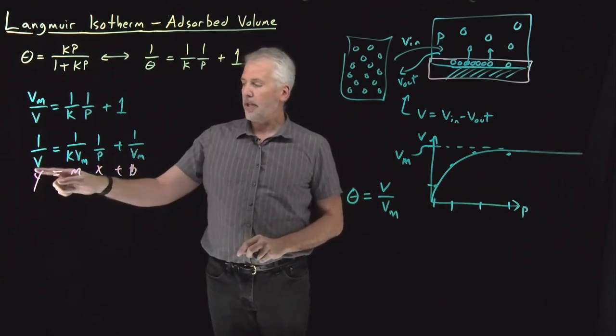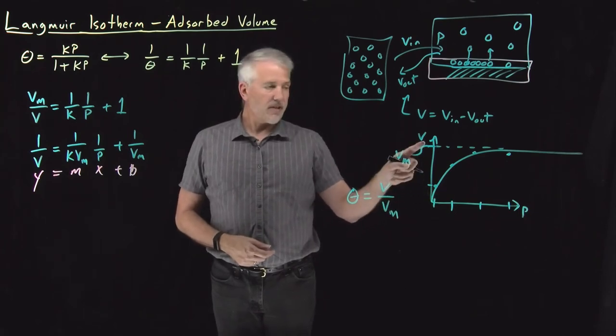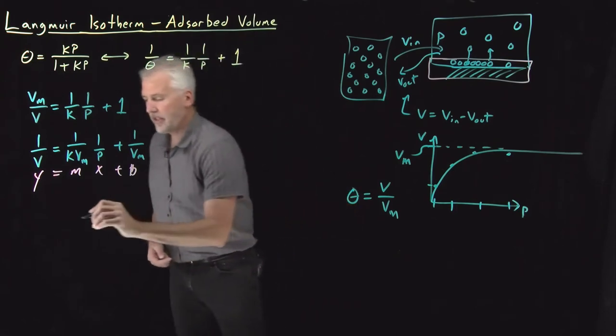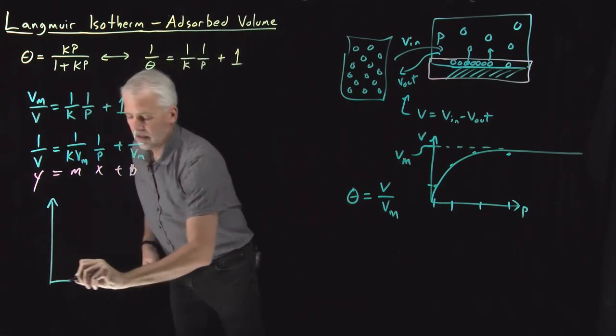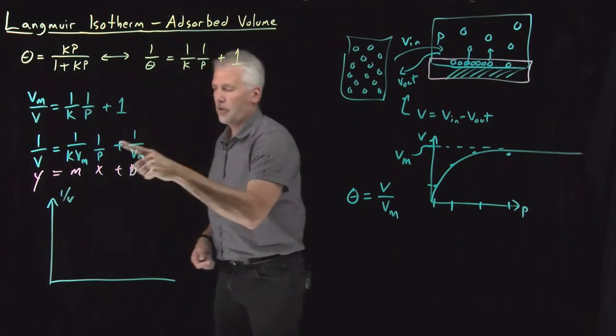So if we want to make a graph that corresponds to the things that we're actually measuring, again, instead of plotting V versus P and getting this non-linear curve, what's more convenient is to plot, as suggested by this equation, one over V as a function of one over P.